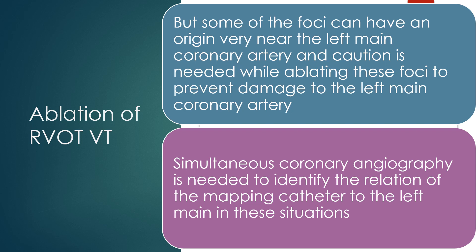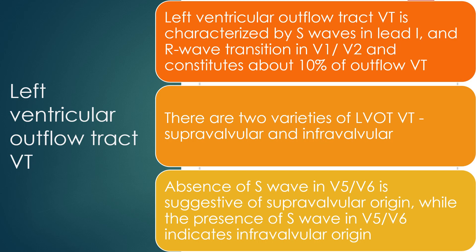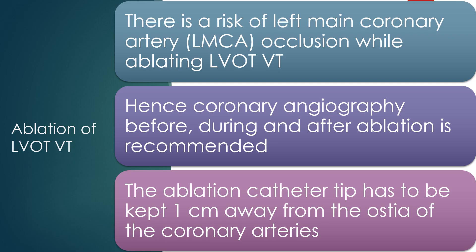Simultaneous coronary angiography is needed to identify the relation of the mapping catheter to the left main in these situations. Left ventricular outflow tract VT is characterized by S waves in lead 1 and R wave transition in V1 and V2, and constitutes about 10% of outflow VT. There are two varieties of LVOT VT: supravalvular and infravalvular. Absence of S wave in V5 and V6 is suggestive of supravalvular origin, while presence of S wave in V5 and V6 indicates infravalvular origin. There is a risk of left main coronary artery occlusion while ablating LVOT VT; hence coronary angiography before, during, and after ablation is recommended. The ablation catheter tip has to be kept 1 cm away from the ostia of the coronary arteries.